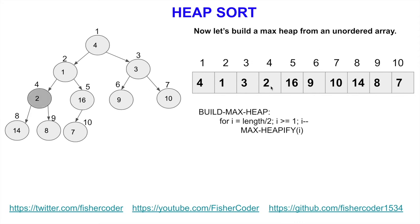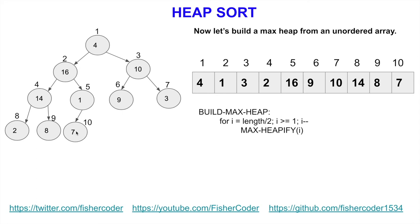Moving to index 4 with value 2: it's smaller than both children, so we swap it with 14. That subtree is now a valid max heap. Decrementing i to index 3, that node is also not a valid max heap, so we swap with 10. At i equals 2 with value 2, it's smaller than both children, so we swap up with 16. We continue calling max heapify — 2 is smaller than its children so we swap again.